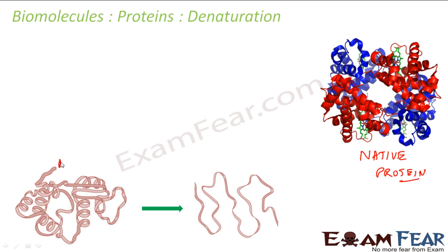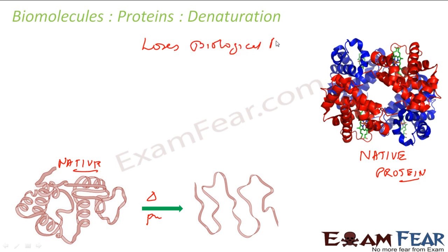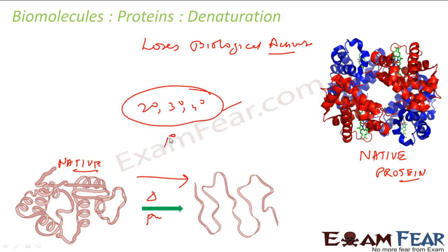When this native protein is subjected to physical changes like change in temperature or change in pH, the hydrogen bonds which bind this protein get disturbed. Due to weakening of these hydrogen bonds, the globules unfold and the helix gets uncoiled, and the protein loses its biological activity. This process is called denaturation of protein. In this case, the secondary, tertiary, and quaternary structures are all lost, but the primary structure — that is, the sequence of amino acids — remains intact.